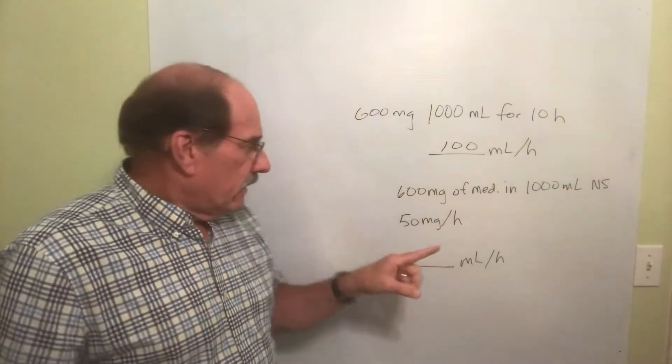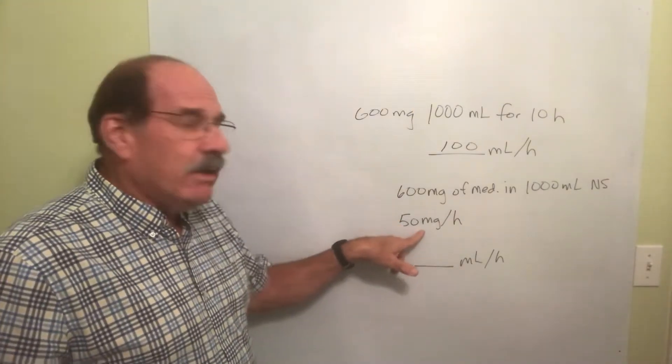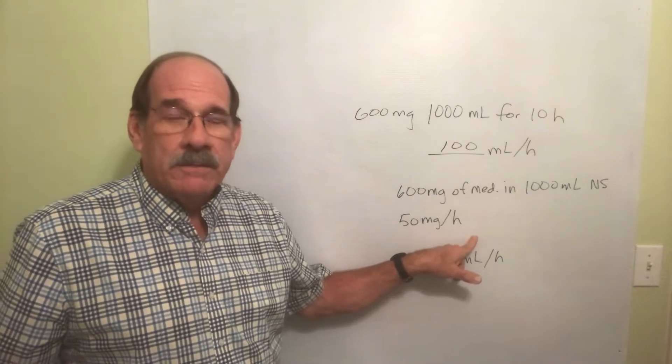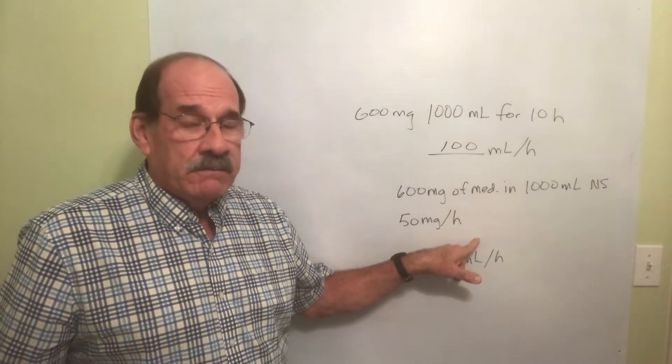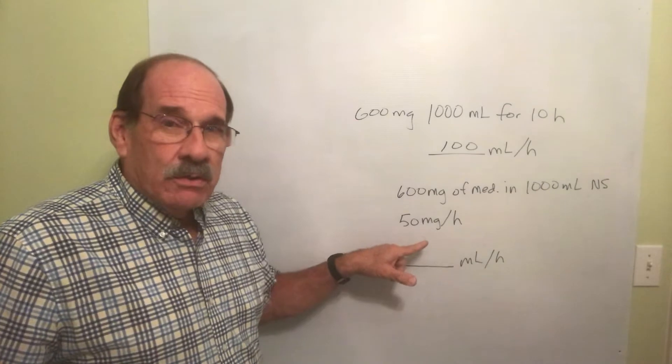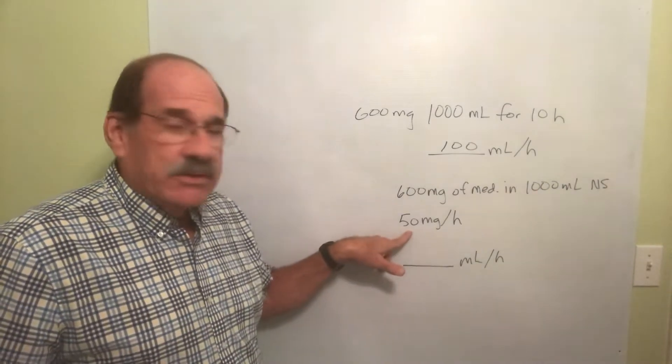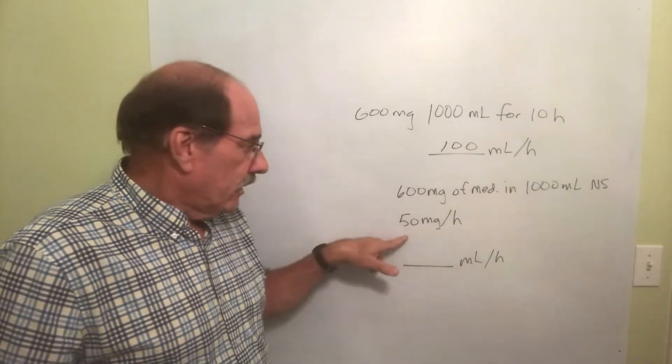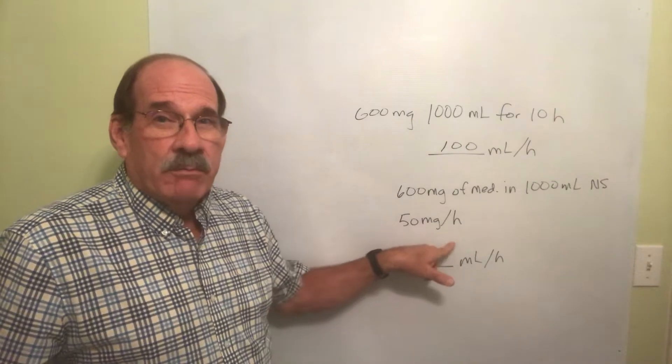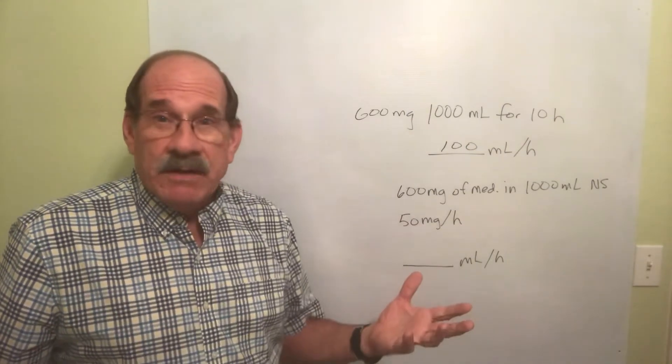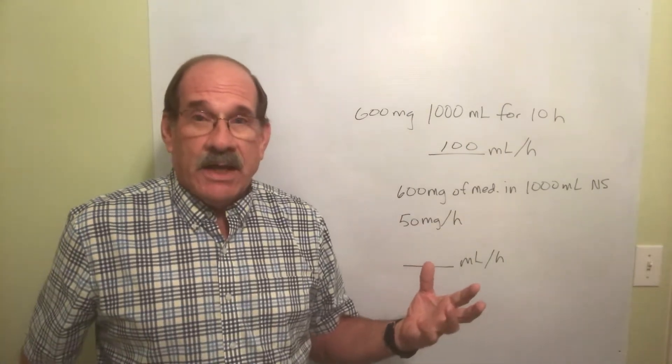We're told this: here's the order. The order is to give the patient 50 milligrams per hour. That's very different. Anytime you're told some amount of medicine in some length of time, I'm going to give 50 milligrams per hour, I do this very much like a plain old dosage calculation.